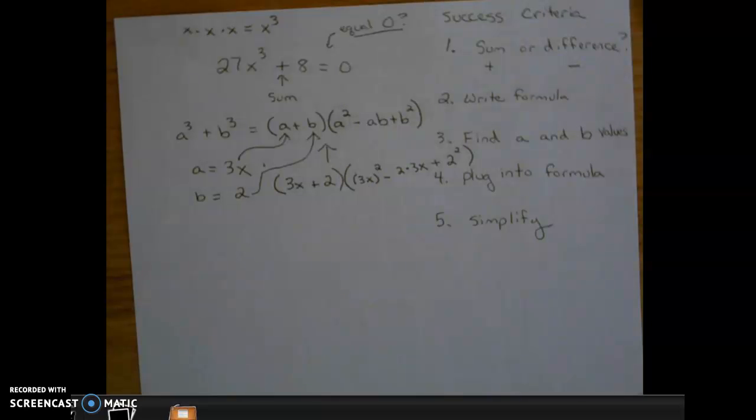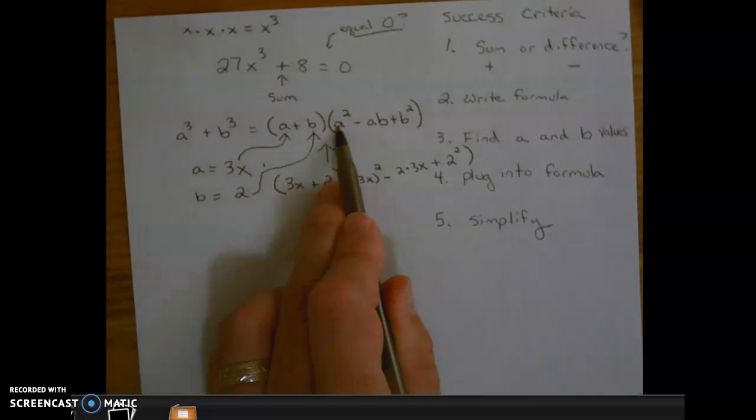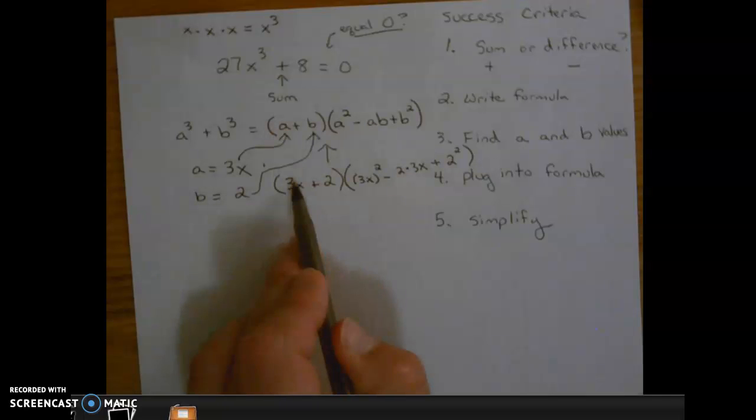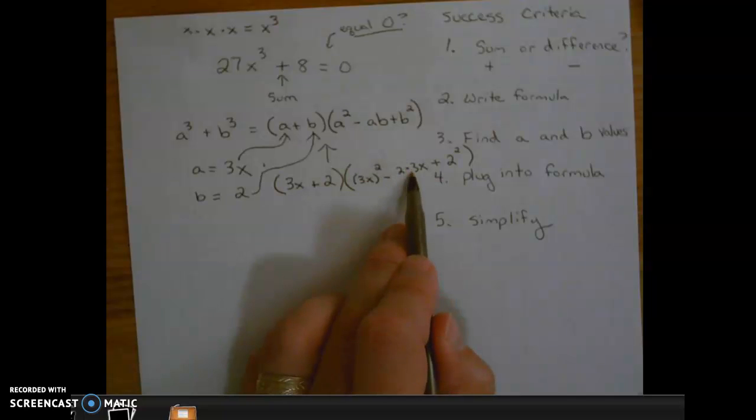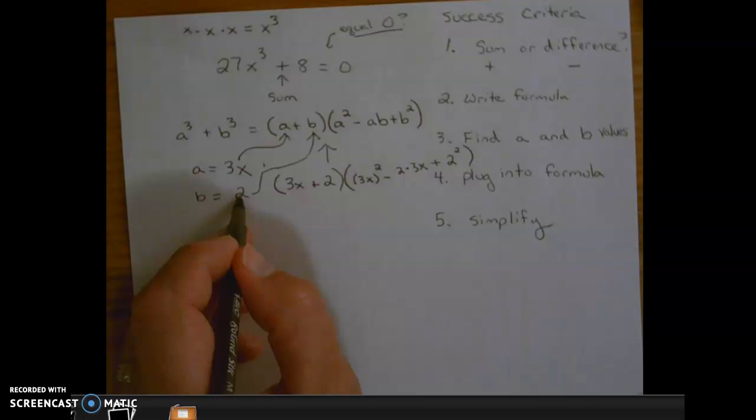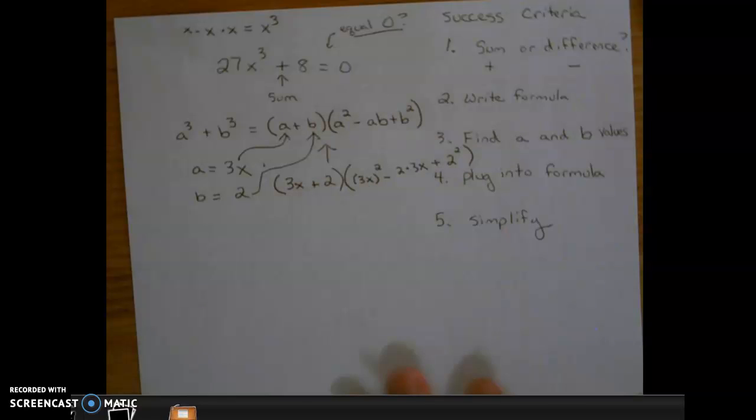So all we're doing is taking the a value and plugging it into the formula everywhere we see an a. So it's going in here, here, and here. The b value goes in here, so b value goes in here for b, in for b, and in for b.